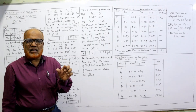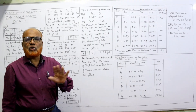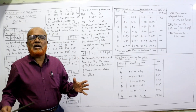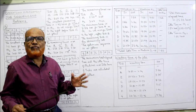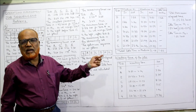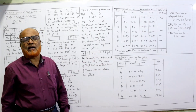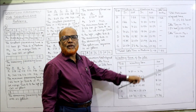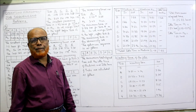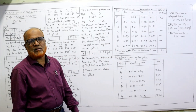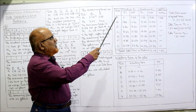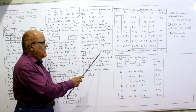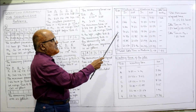Once M1 starts functioning, it will not stop in between until the last job is complete — so no in-between idle time for M1. Only at the end do we calculate M1's idle time. For M2, idle time can occur in between, which is why there is a separate column. The sequence is B, A, E, C, D, F, G.